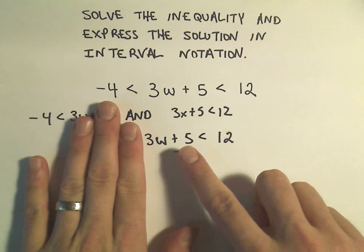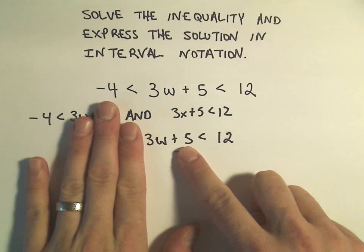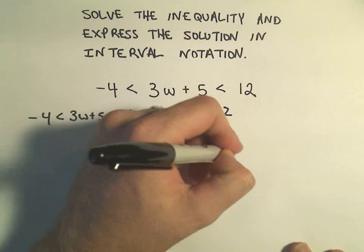Likewise, if we just had 3w + 5 less than 12, to solve that inequality I would do the exact same thing which is subtract 5.